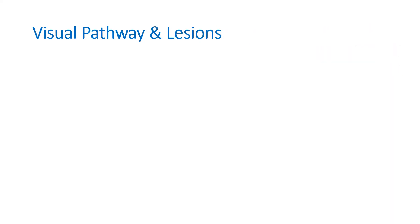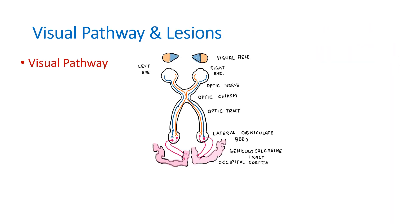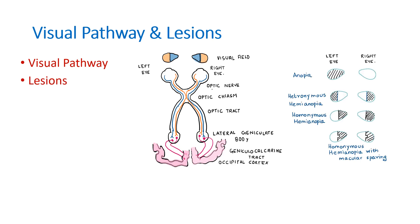When a question on visual pathway and lesions is asked, you have to draw the diagram, explain the different levels, and also explain which lesion occurs when the visual pathway is transected at each level. I hope the concept is clear. Thank you.